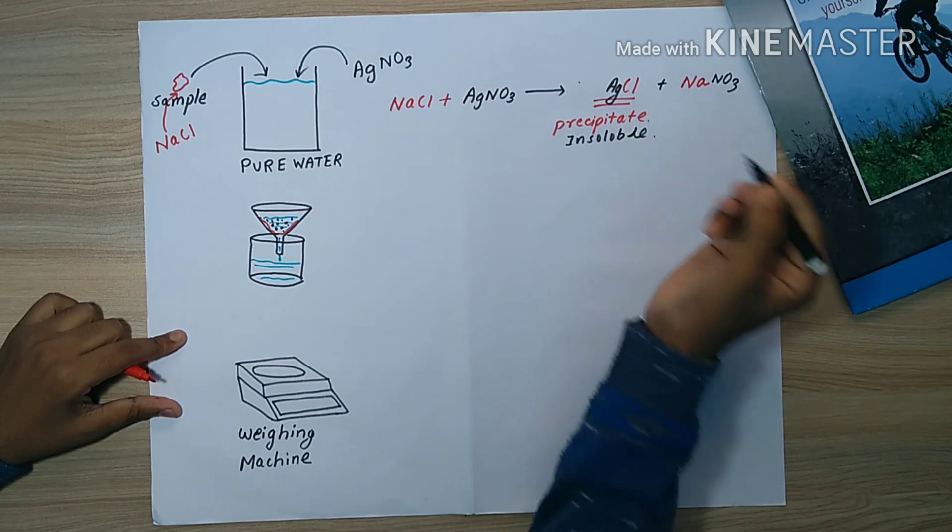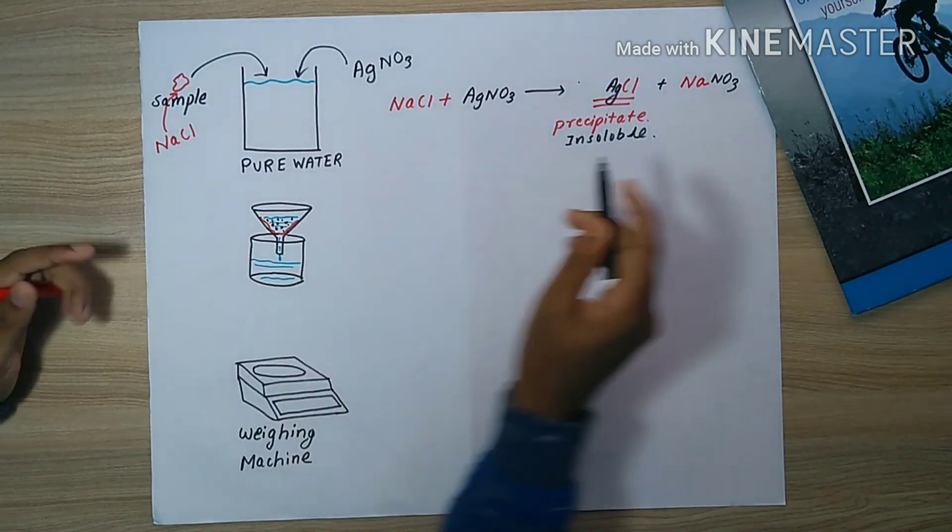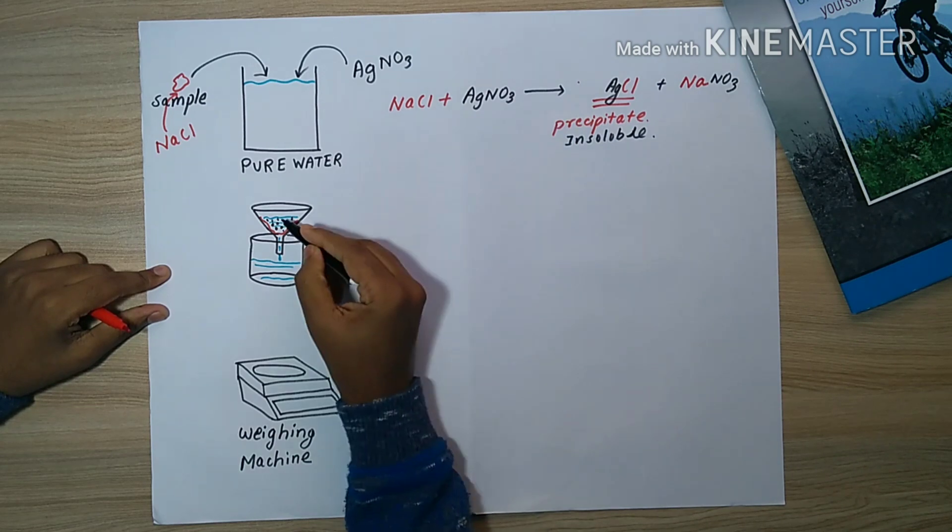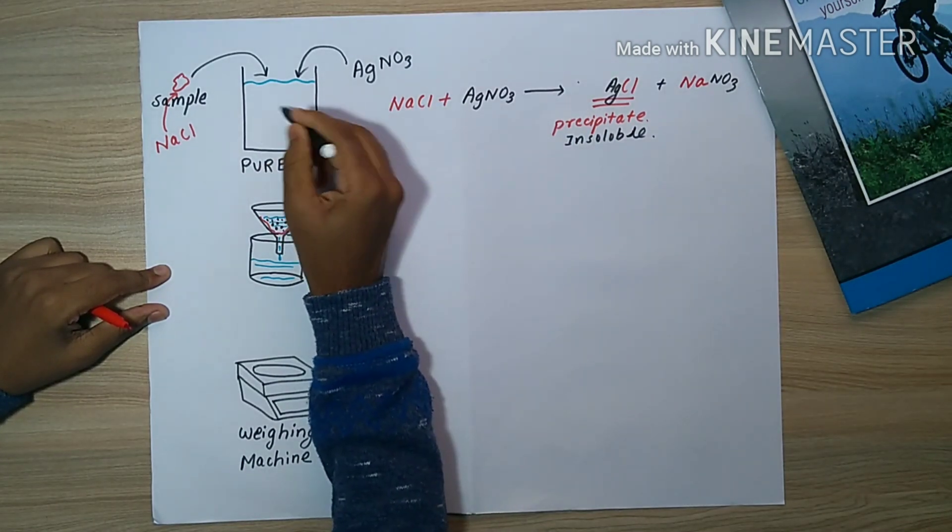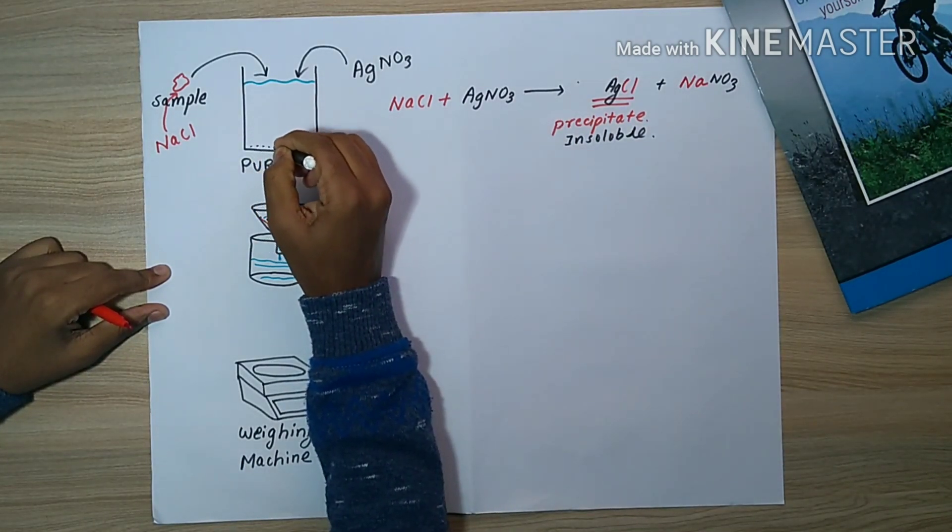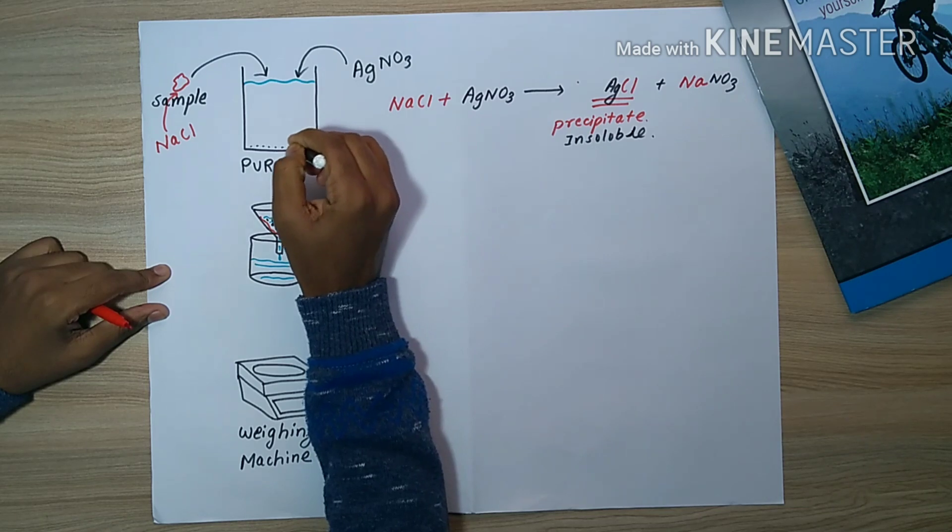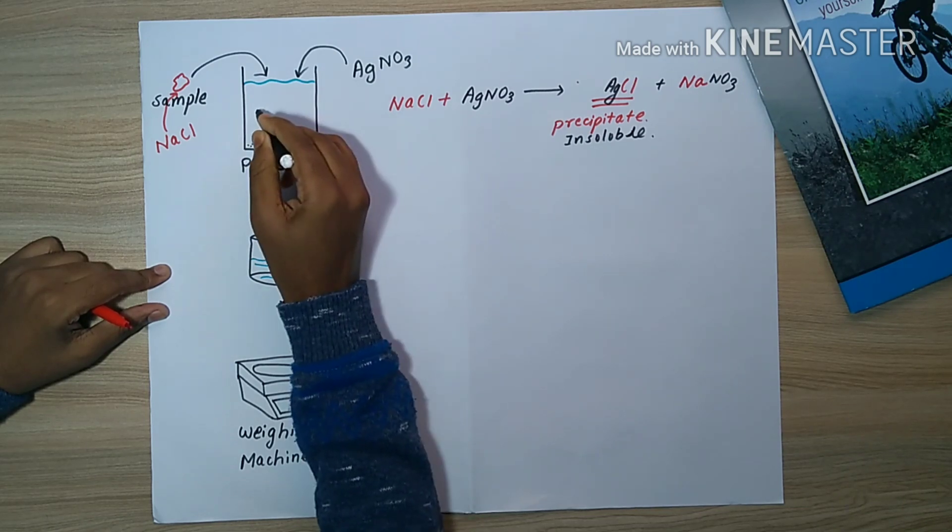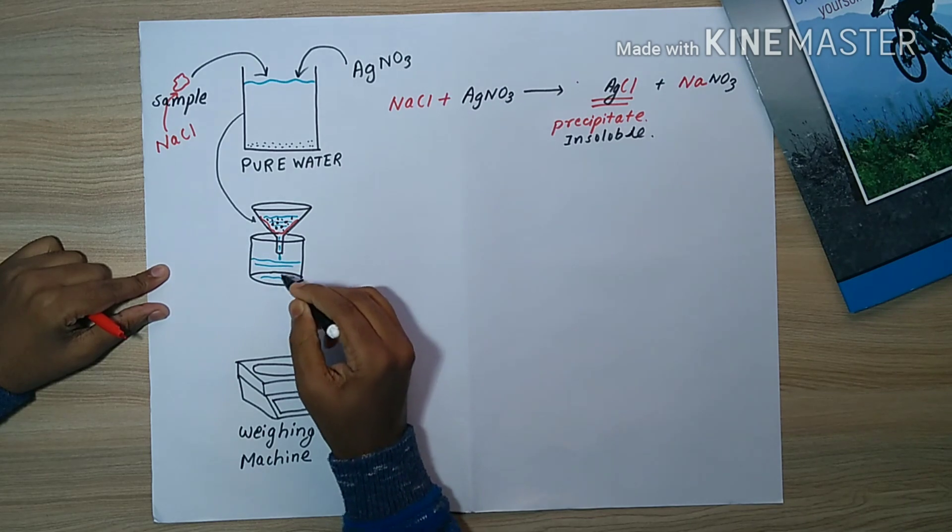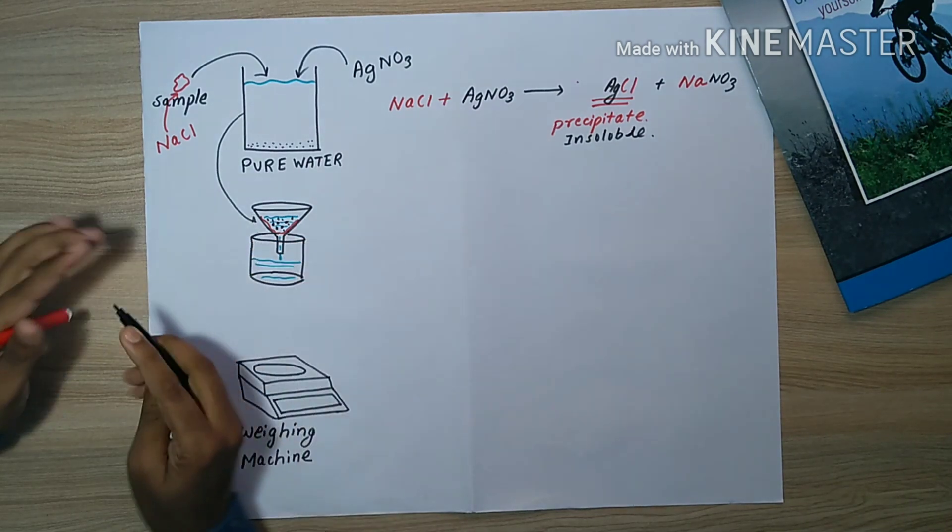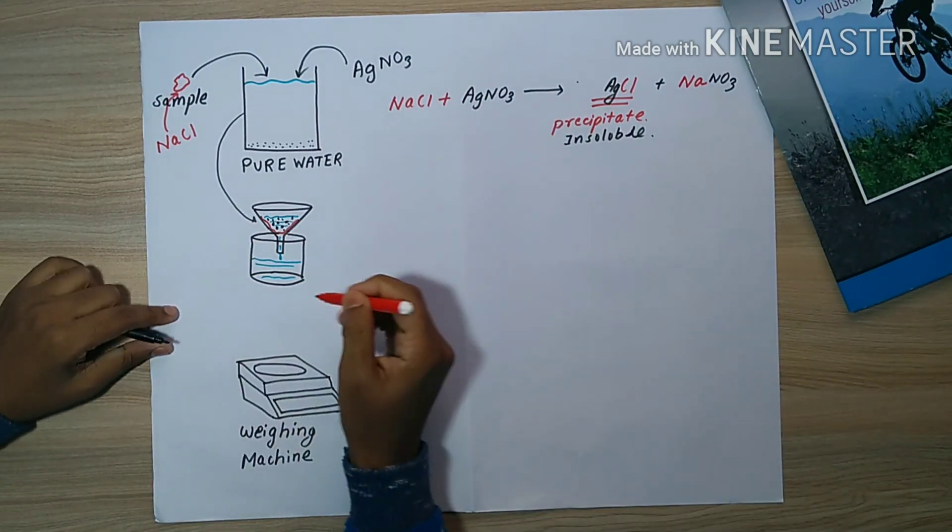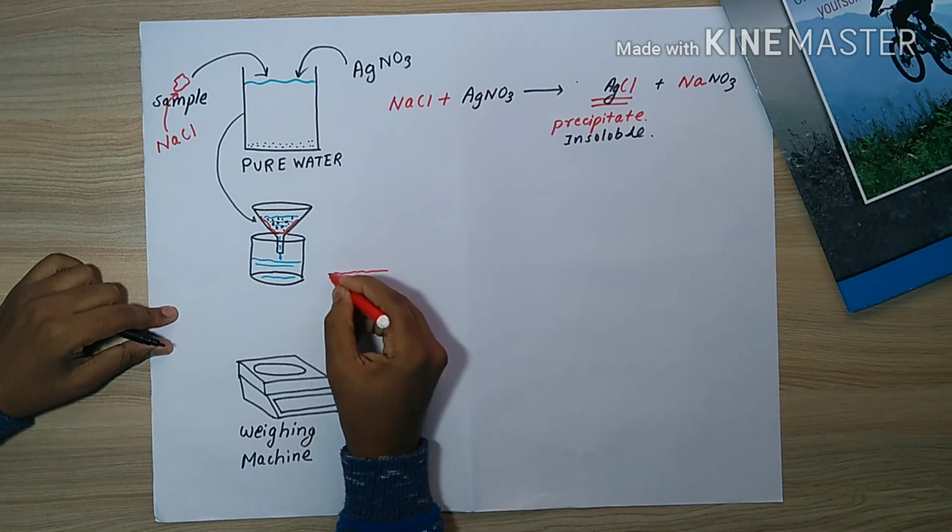This precipitate is formed due to the insoluble AgCl. This precipitation is the third step of gravimetric analysis. Now the precipitate has formed - I am showing it with a dot structure on the bottom. Along with the precipitate, the solution is poured into the funnel where the red color represents the filter paper. So it is filtered - the fourth step, filtration.